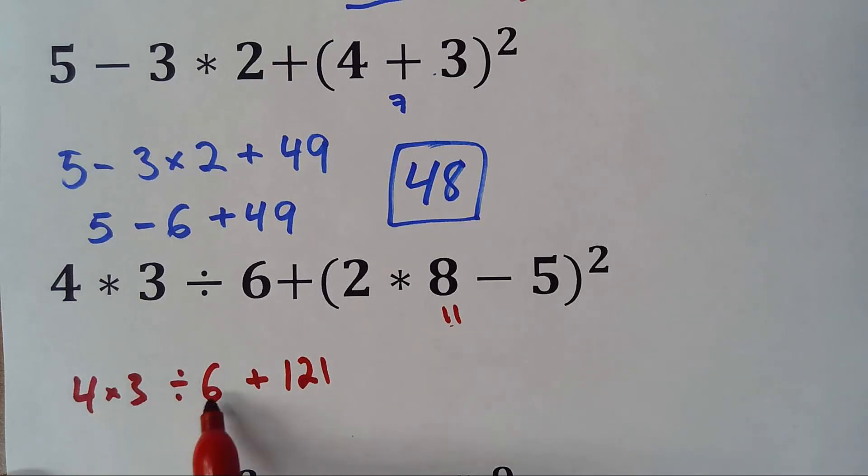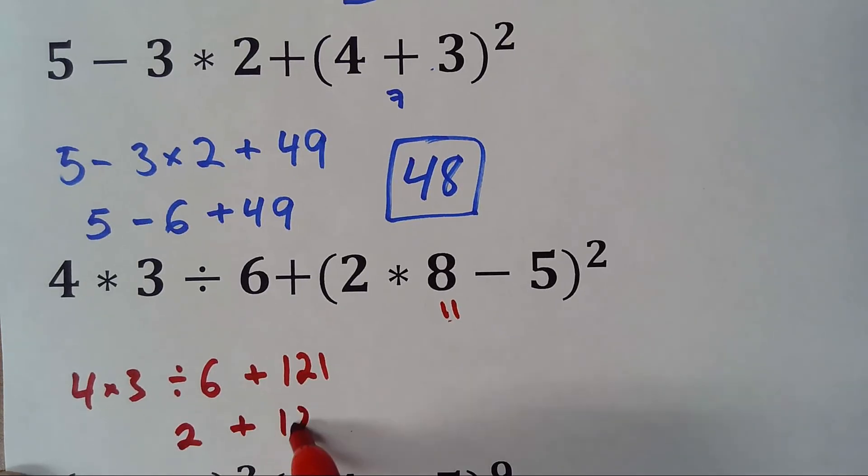Okay, 4 times 3 is 12, 12 divided by 6 is 2, so 2 plus 121, so the answer is 123.